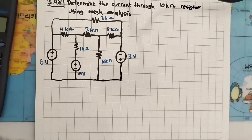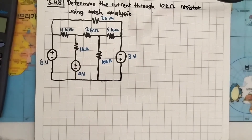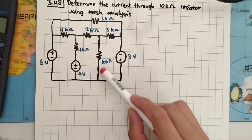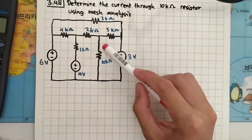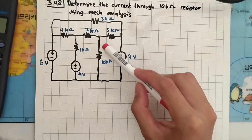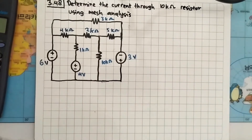We are going to solve problem 3.48 from the study cookbook. The question is: determine the current through the 10 kilo ohm resistor using mesh analysis. This is the 10 kilo ohm resistor, so we need to find out how much current is flowing through this resistor using mesh analysis.